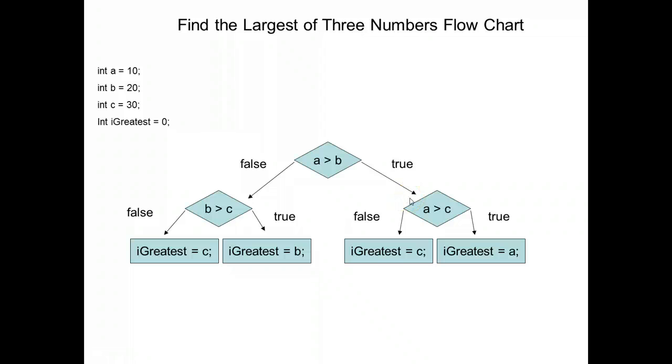The next thing we need to find out is if A is greater than C. If A is greater than C, we can assume that A is the greatest number because it was greater than B and greater than C.